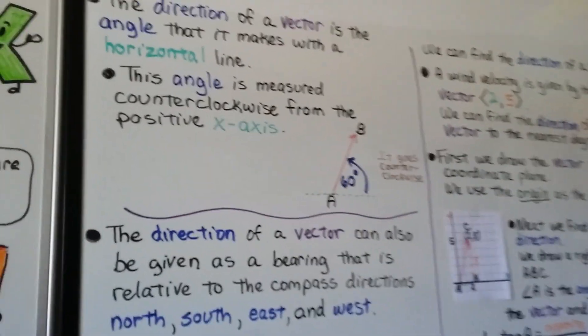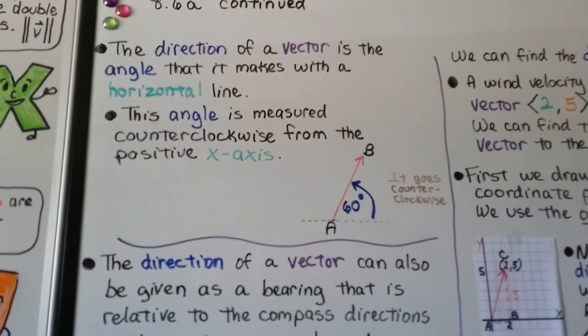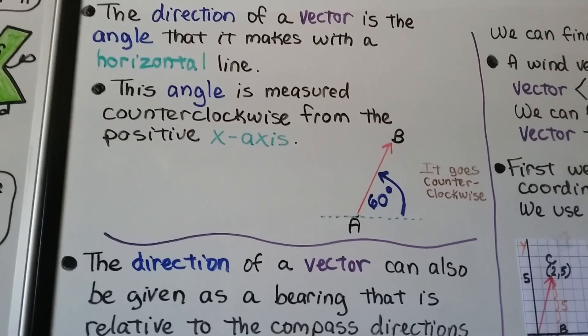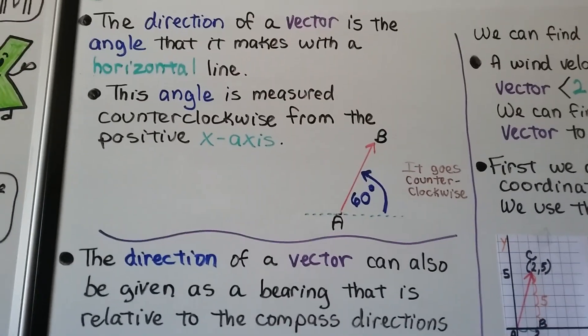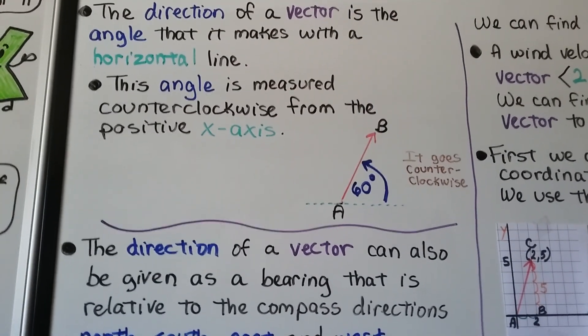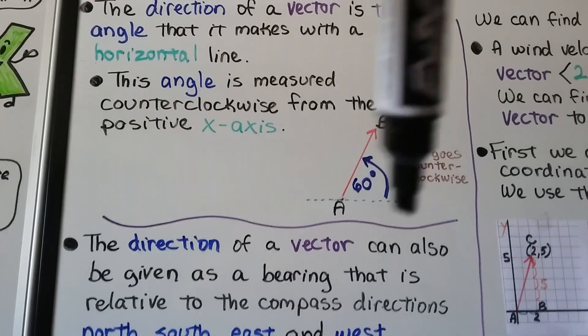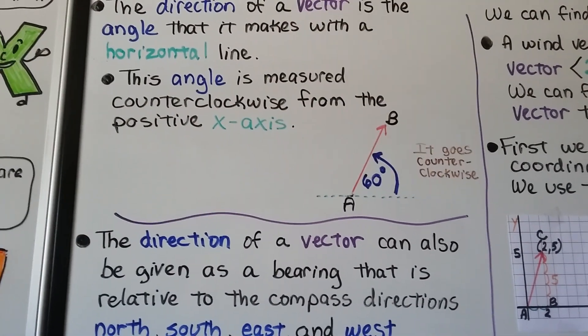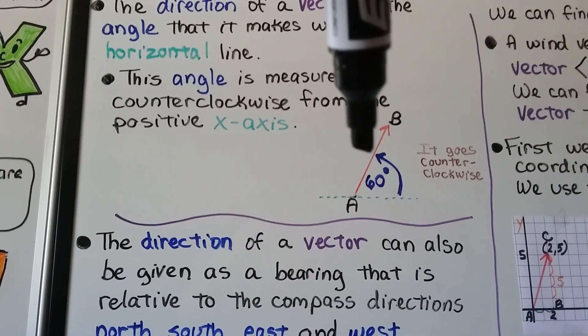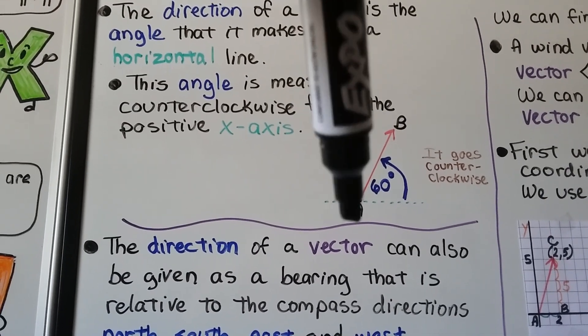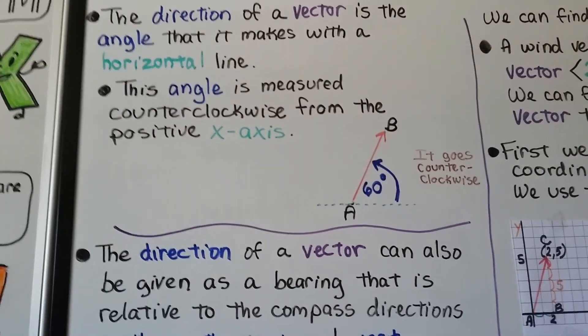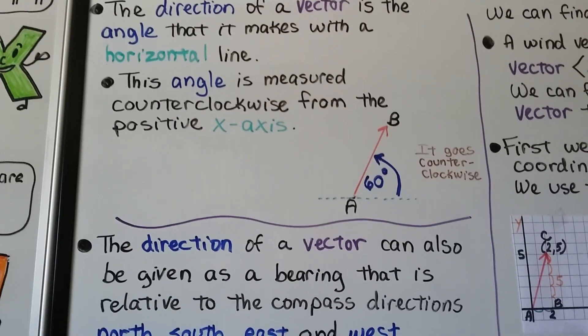And the direction of a vector is the angle that it makes with a horizontal line. And this angle is measured counterclockwise from a positive x-axis. So if that's the x-axis, that green dotted line, it's going counterclockwise. So this vector AB here, angle A is 60 degrees.